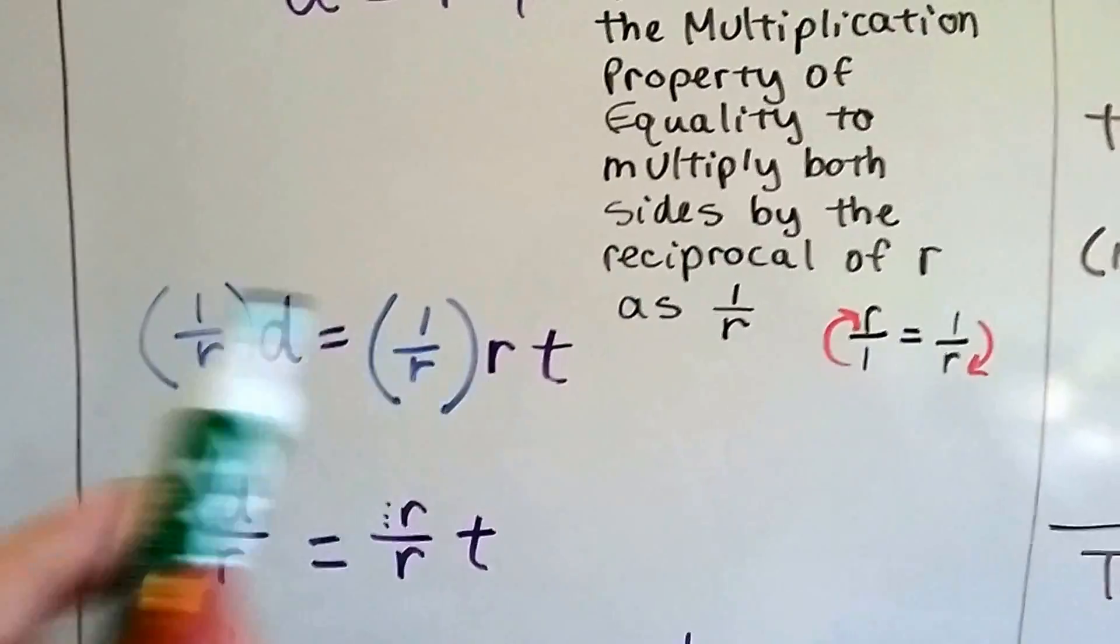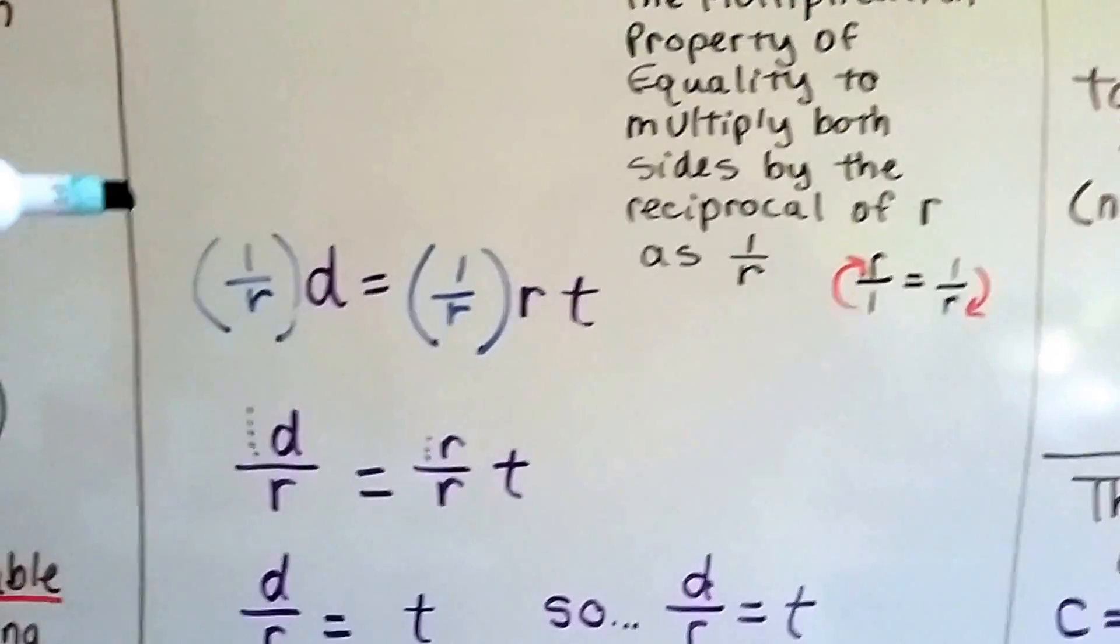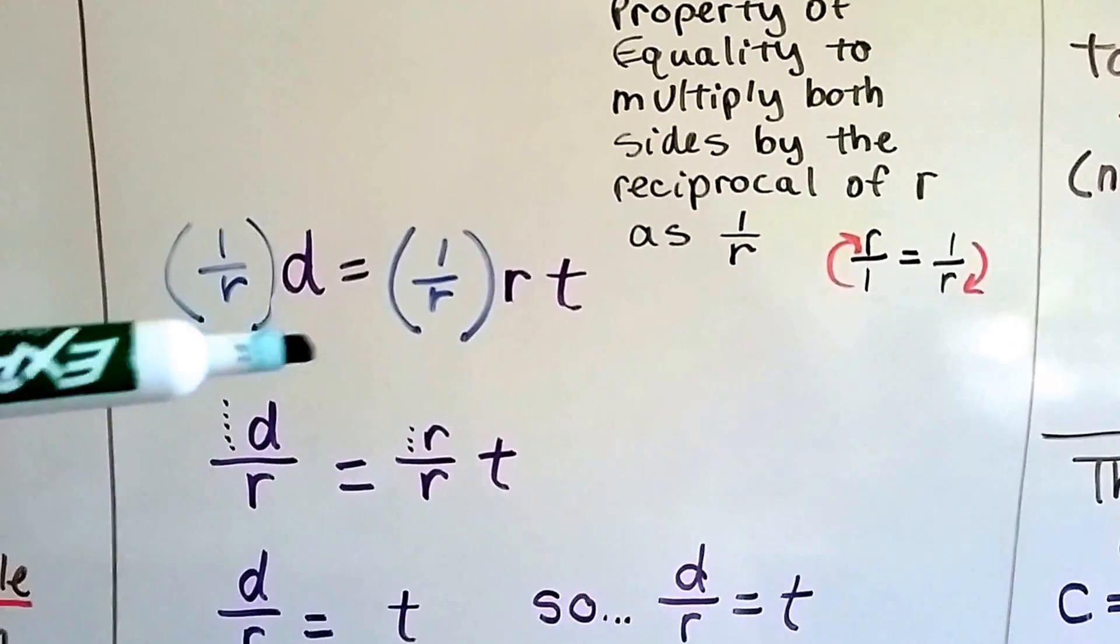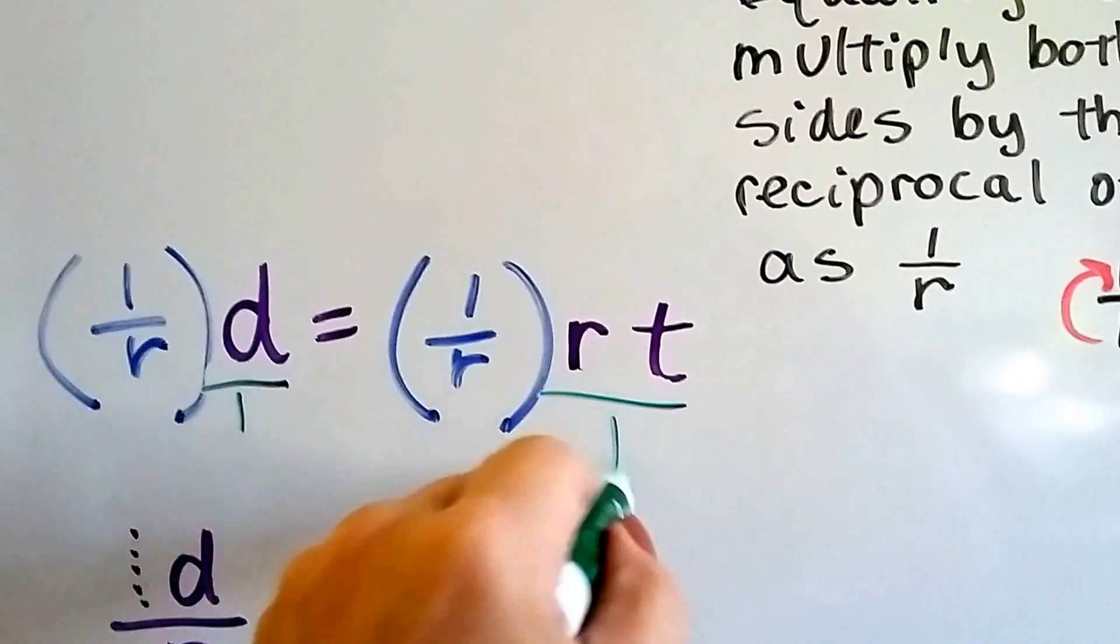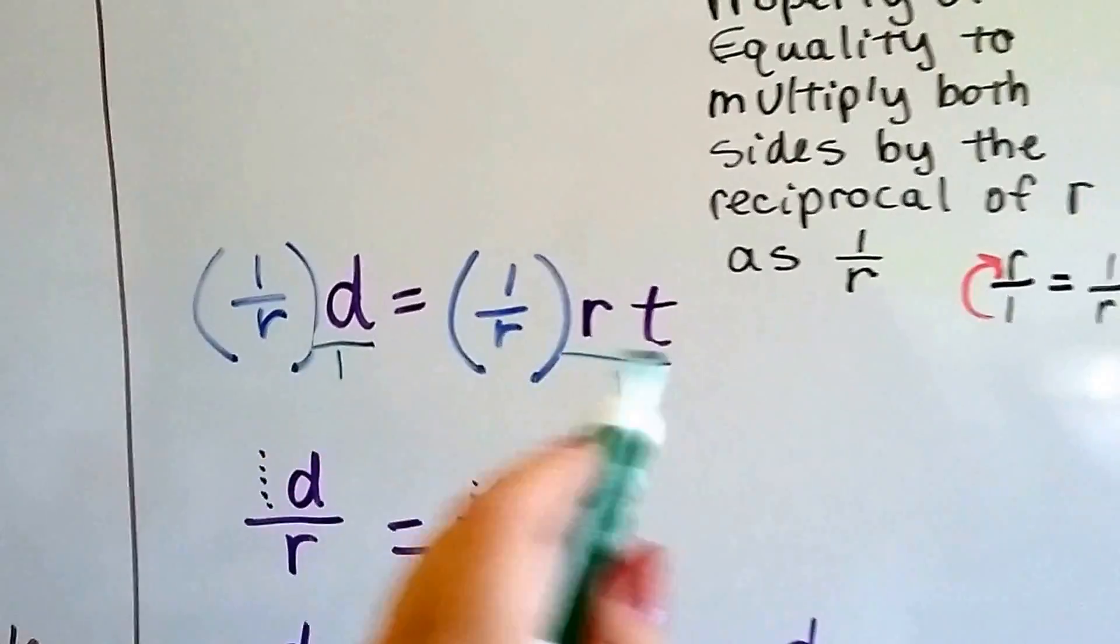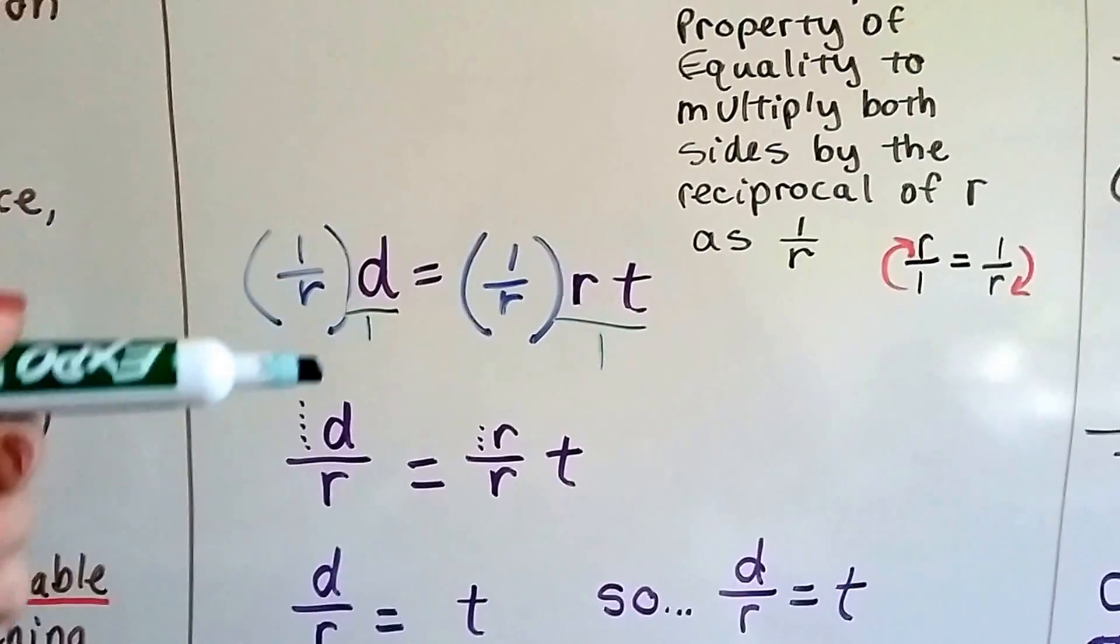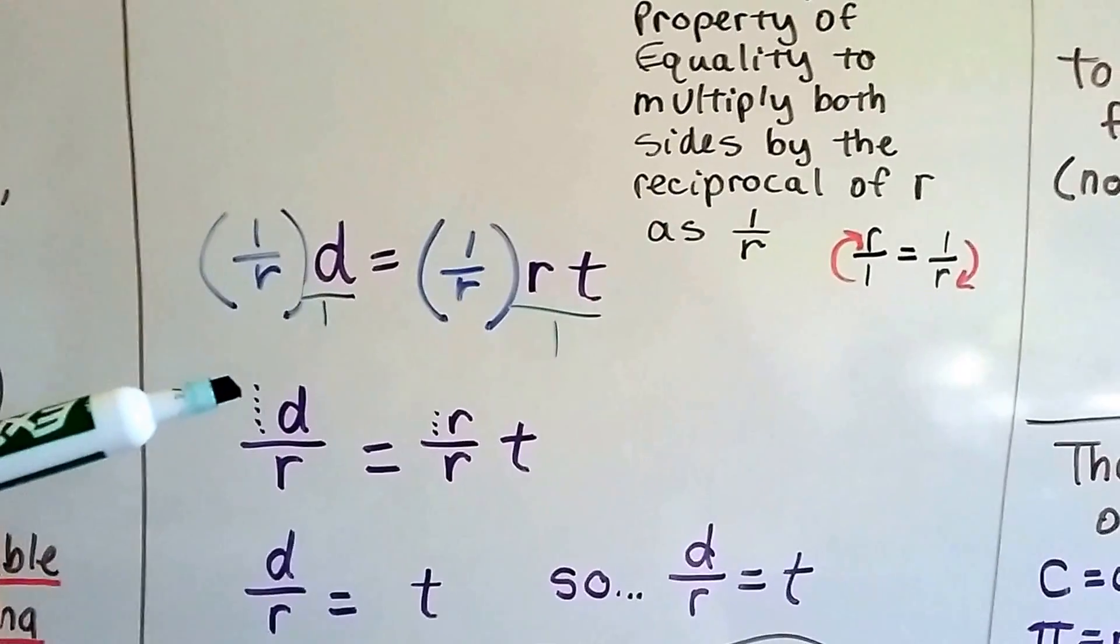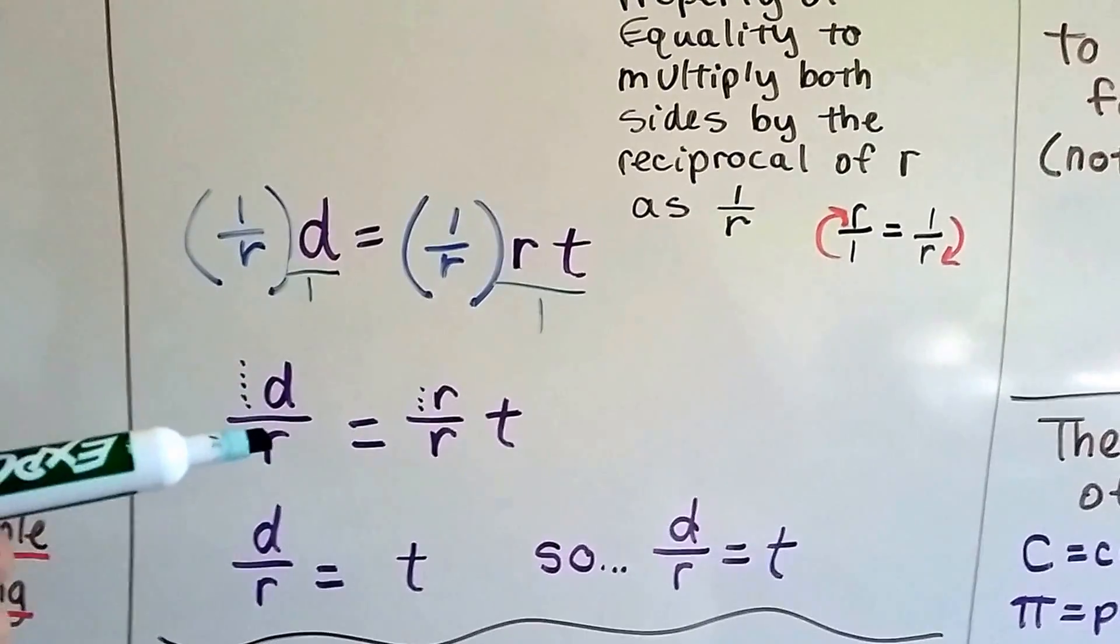We can multiply both sides of this formula by 1 over r, and what we get is a d, 1d, over 1r. Because, technically, we can just multiply with a 1 underneath those, and we get 1d over r1. We don't write the 1. That's our friend, the invisible 1, that identity property. So all we have to do is just have d over r.